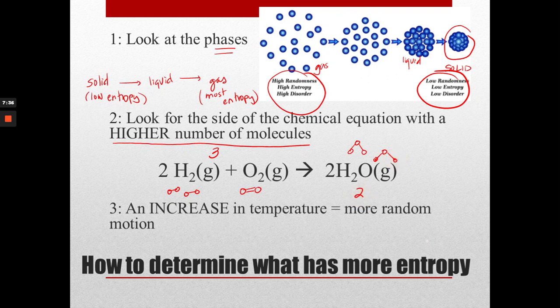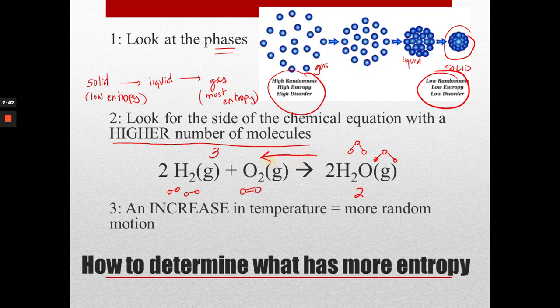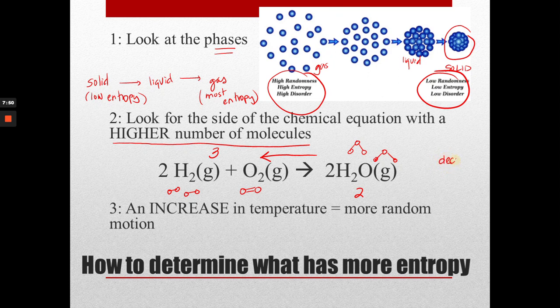This side has two. So what I know is that it will favor this direction. That's the direction of entropy. So this particular reaction has a decrease in entropy the way it's written, because it becomes more ordered. I go from three to two. Nature would tend to want it to go this way.